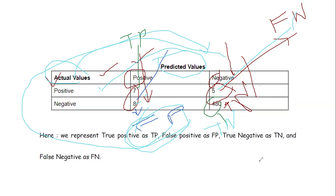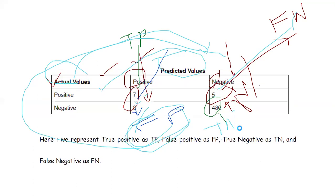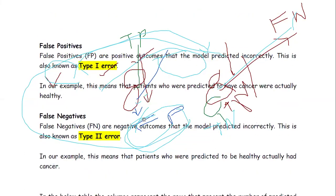I have now discussed the confusion matrix in detail along with true positive, true negative, false positive, and false negative. Remember: Type 1 error is false positive — things the machine predicted as positive but the actual value is not positive. Type 2 error is false negative — the machine predicted negative but they are actually positive.